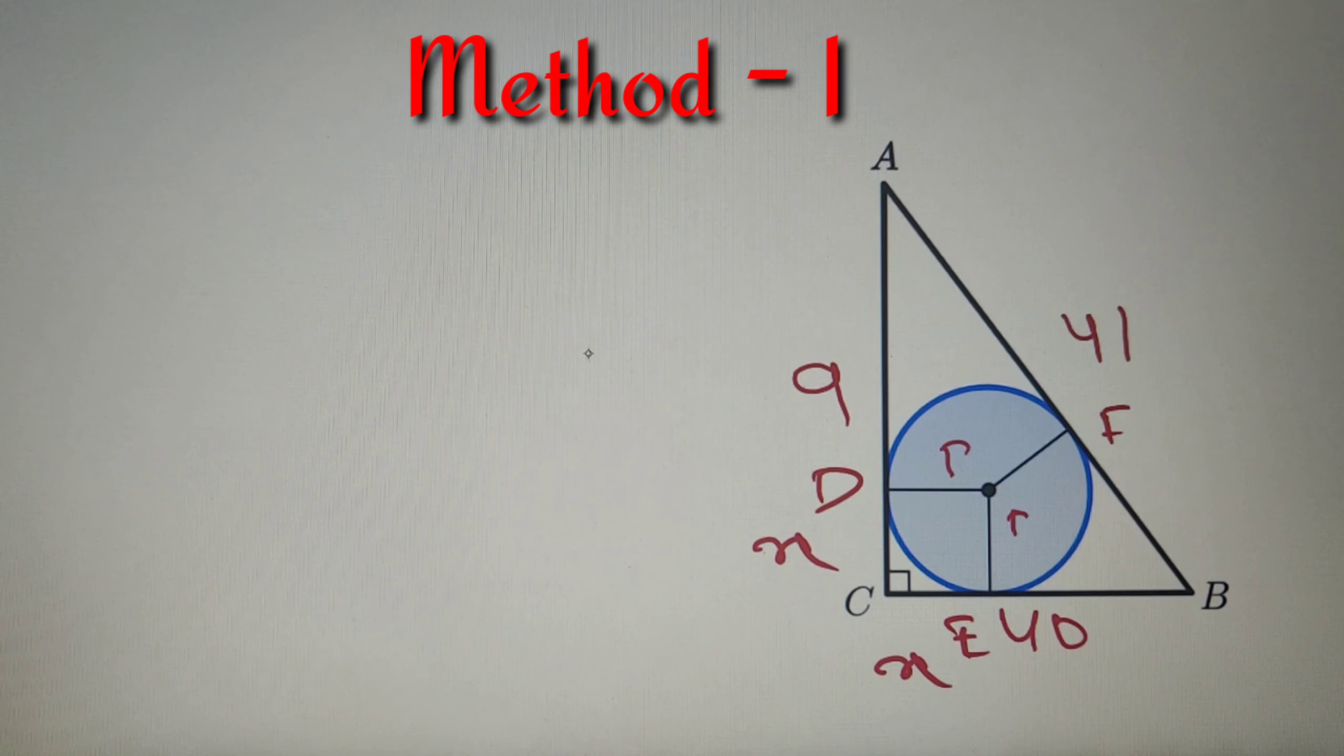Then the distance AD becomes 9 minus X, because the distance AC is equal to 9 and if this distance is X, then this distance becomes 9 minus X. Now AF will also be equal to 9 minus X because AD and AF are tangents from the same point.